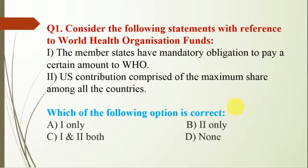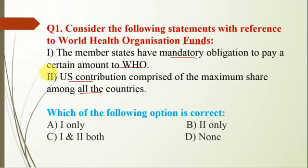Question number 1 is regarding the World Health Organization Fund. Statement one: member states have a mandatory obligation to pay a certain amount to WHO. Statement two: US contribution comprises the maximum share among all countries. Statement one is incorrect in terms of contribution. Statement two is correct. So the option will be B, that is second only.